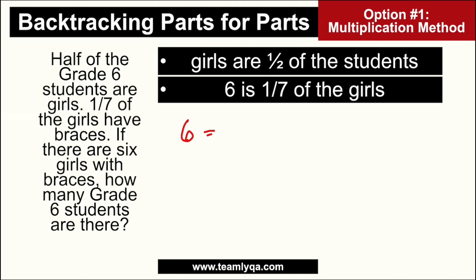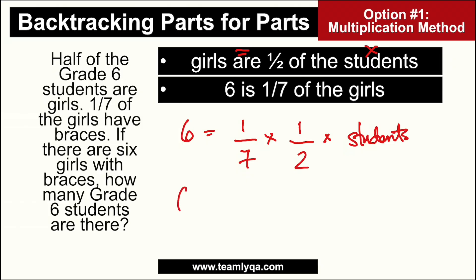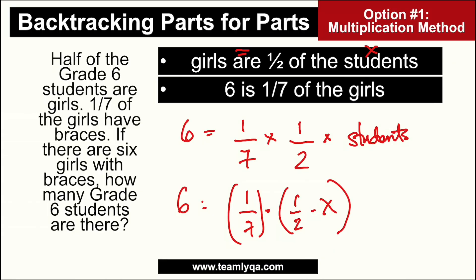Six is one-seventh of the girls, and the girls are one-half of the students. Now if I want to find the students, students becomes x. So that would be: six equals one-seventh times one-half times x. And then you solve for x. A lot of people already have trouble with that, because on top of algebra, you also have fractions. Now, if I don't want to do it that way — you're free to solve it like that if you want algebra — but what if you don't? That's the focus of this video.